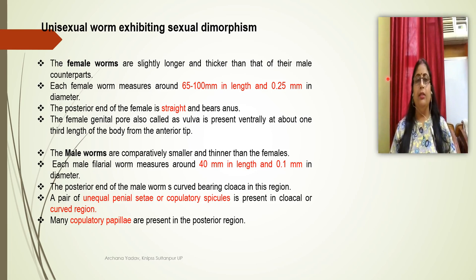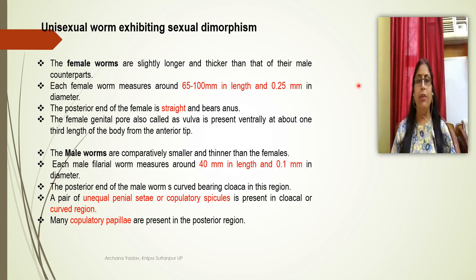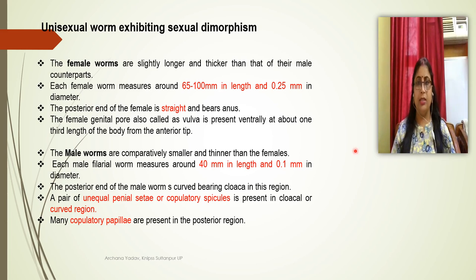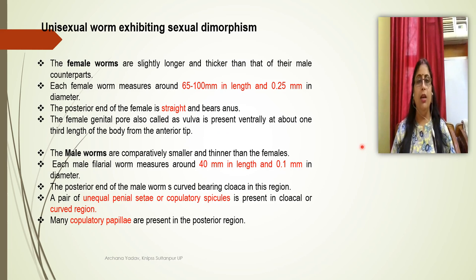It is a unisexual worm exhibiting sexual dimorphism; males and females are separate. The female worm is slightly longer and thicker than the male. The female worm measures approximately 65 to 200 mm in length and 0.25 mm in diameter. The posterior end of the female is straight, bearing the anus. The female genital pore is known as the vulva, present on the ventral side of the body.